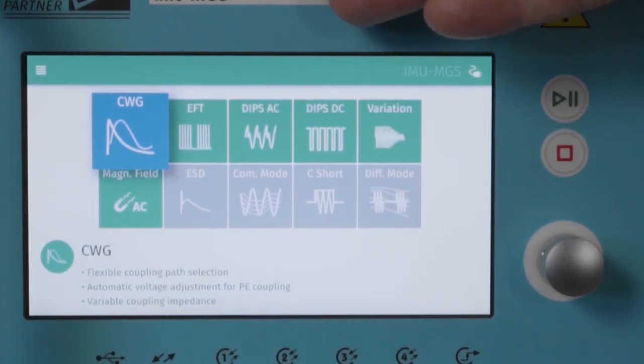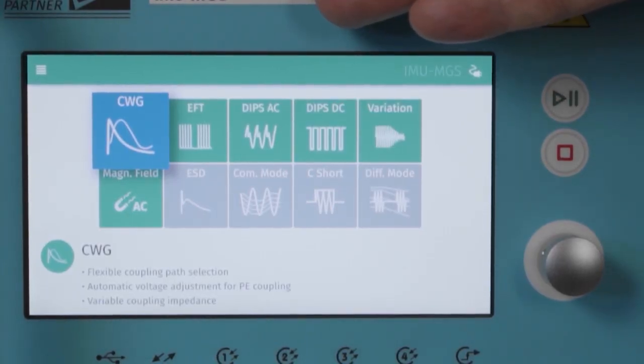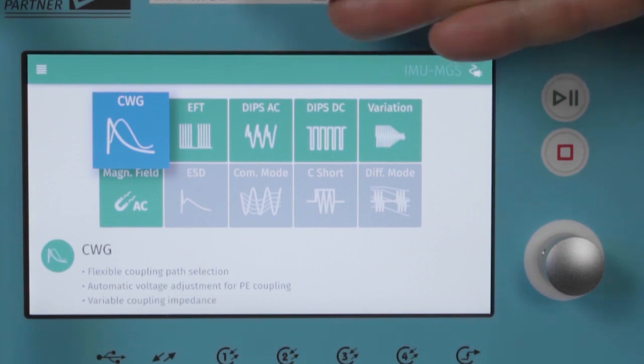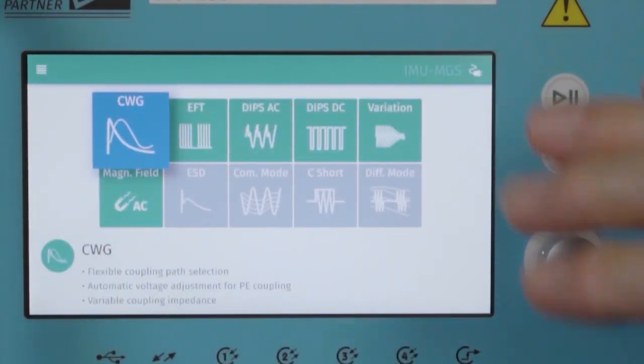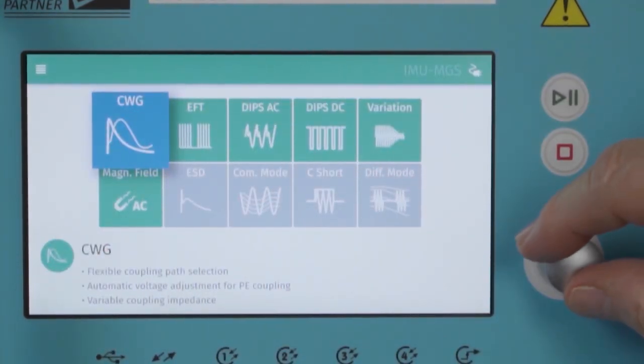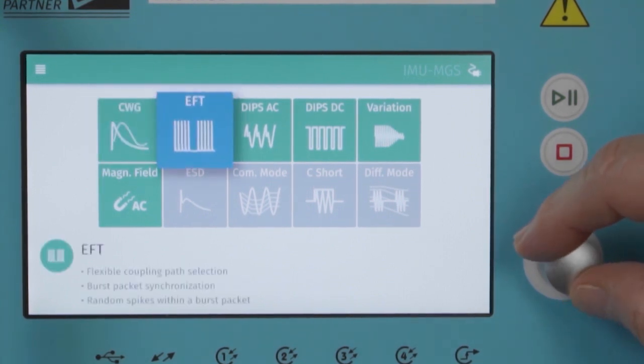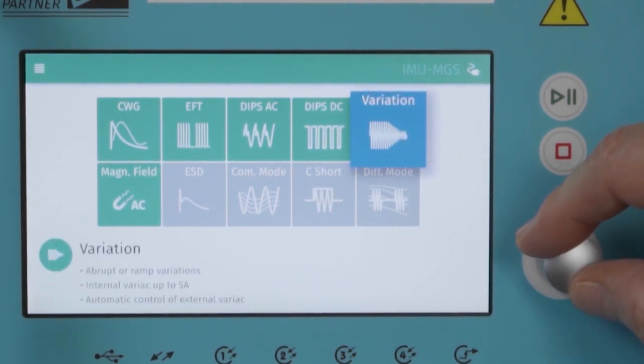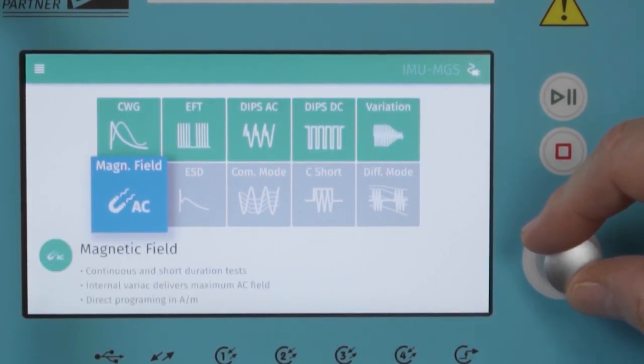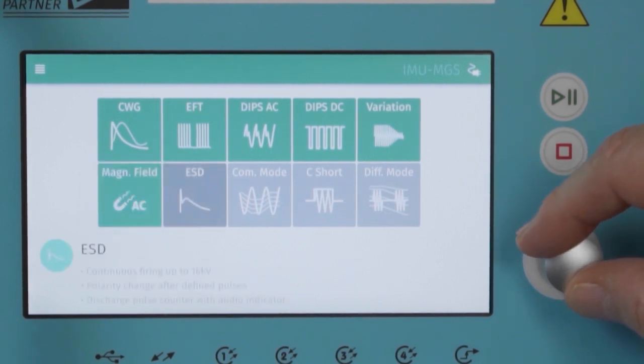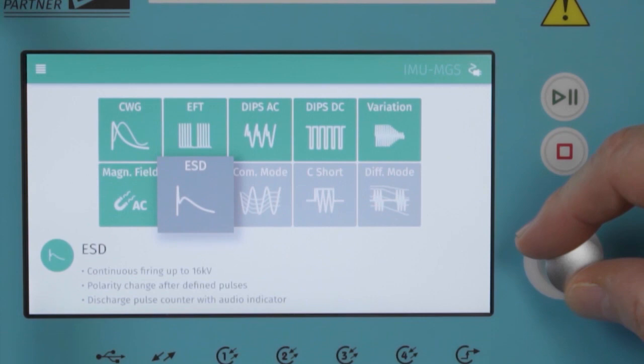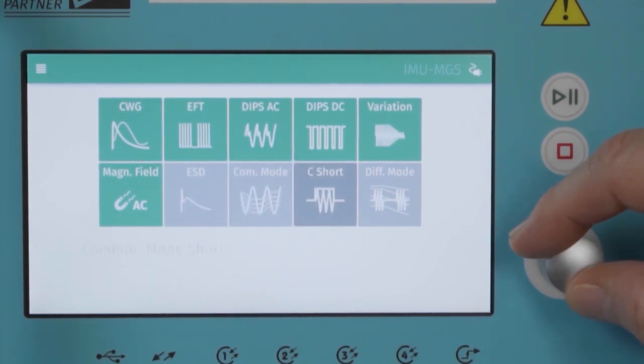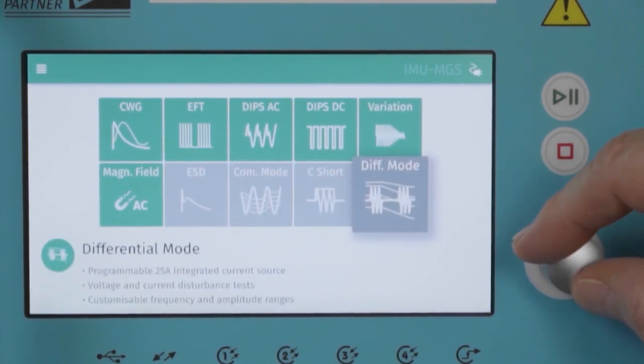This is the controller for the new IMU-MG series generators. We have a new colour touch panel and a rotary knob. The display shows a tile for each of the tests available in the generator. When they're green, the circuit is fitted. When they're blue, they're highlighted to be selected. And when the tile is grey, it's a circuit that can be added at any time also in the field.